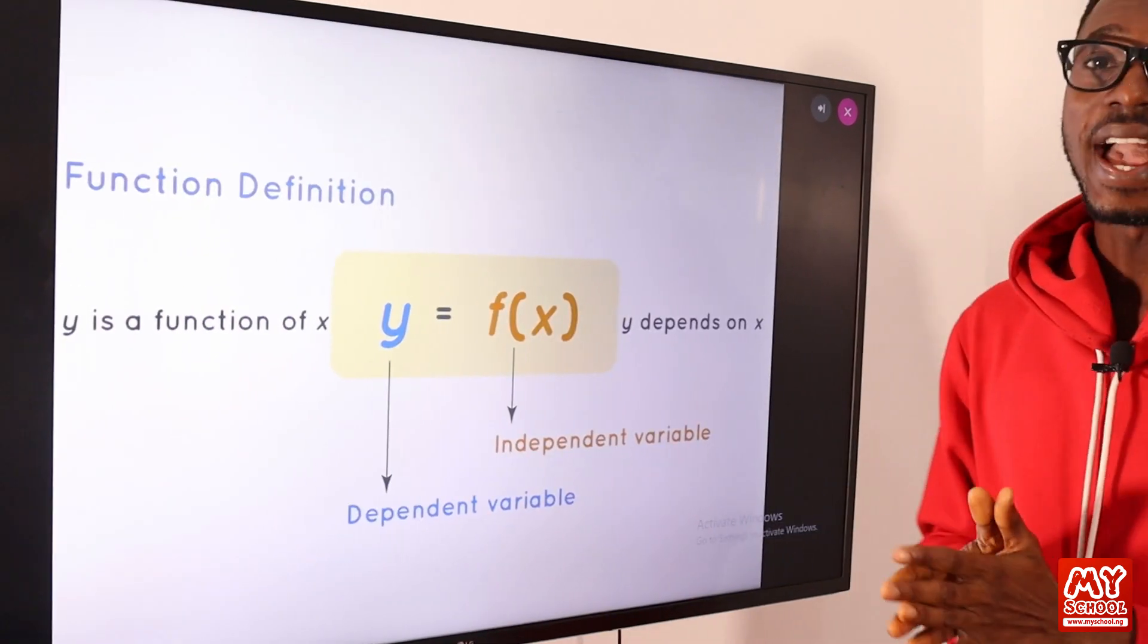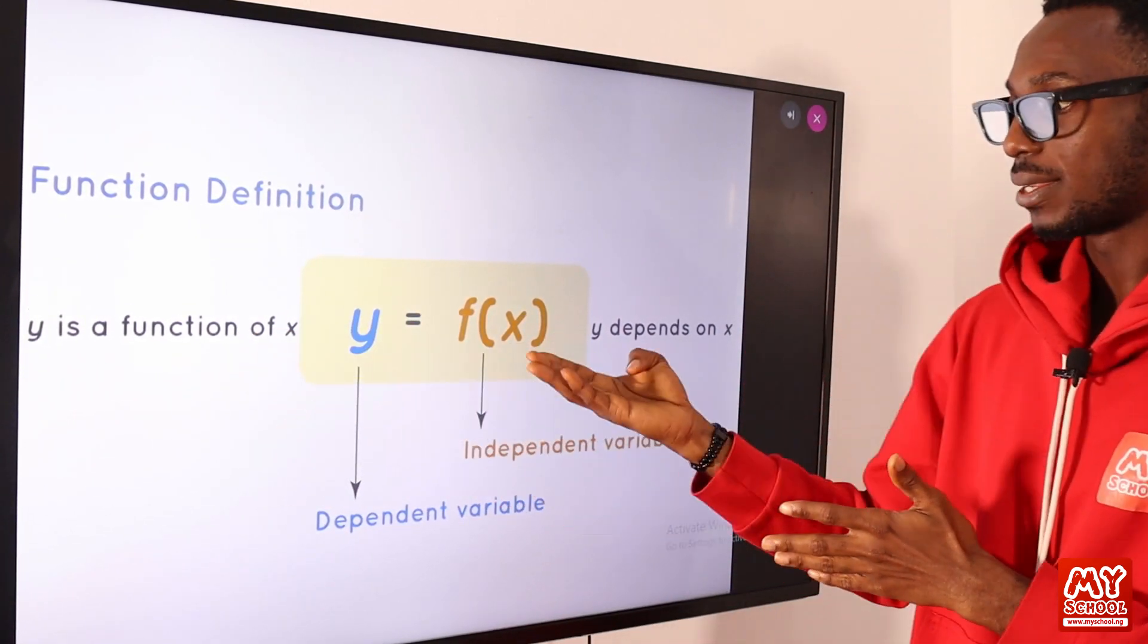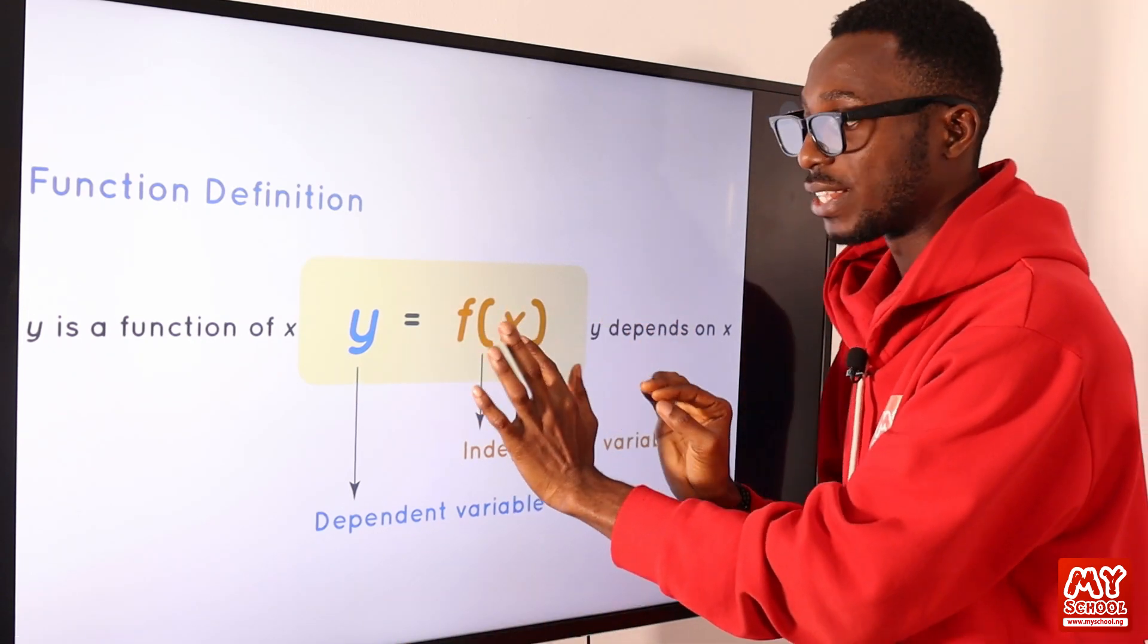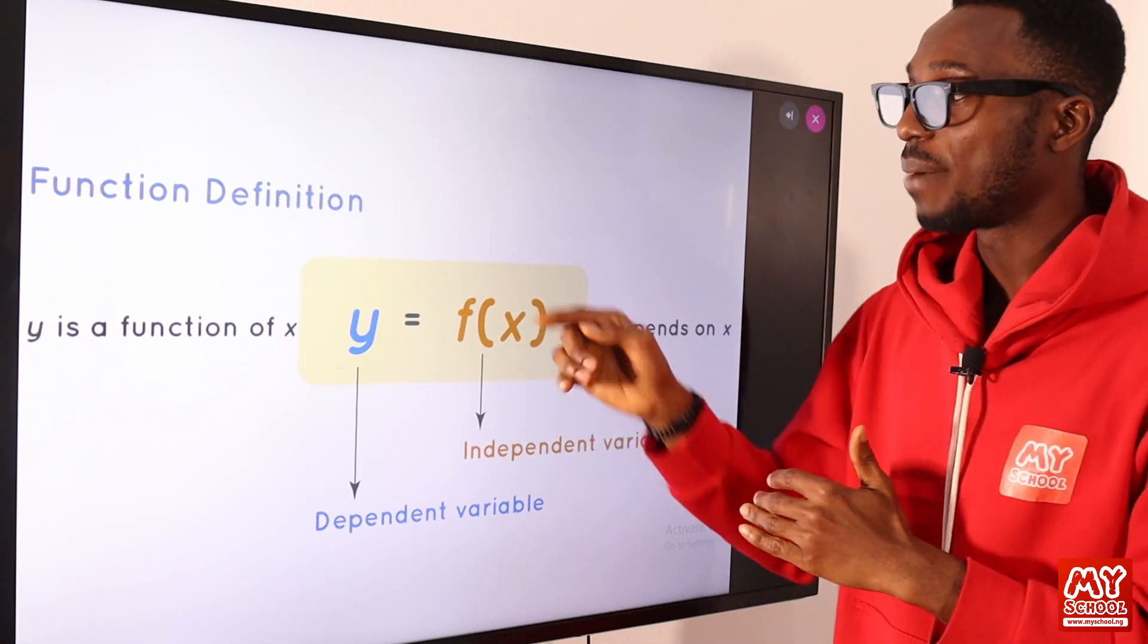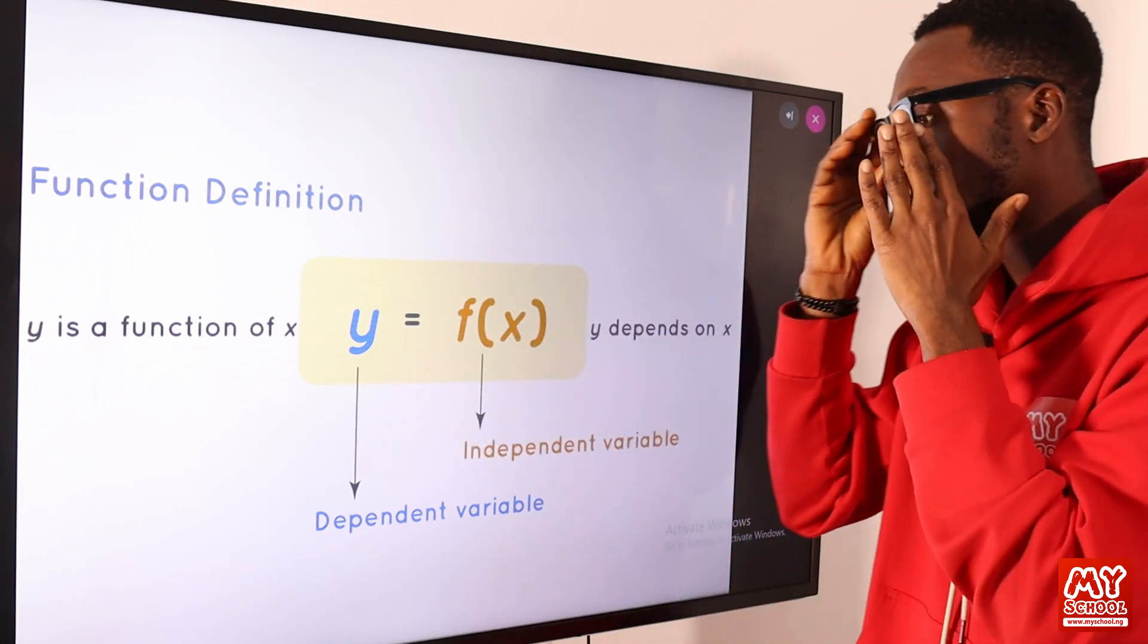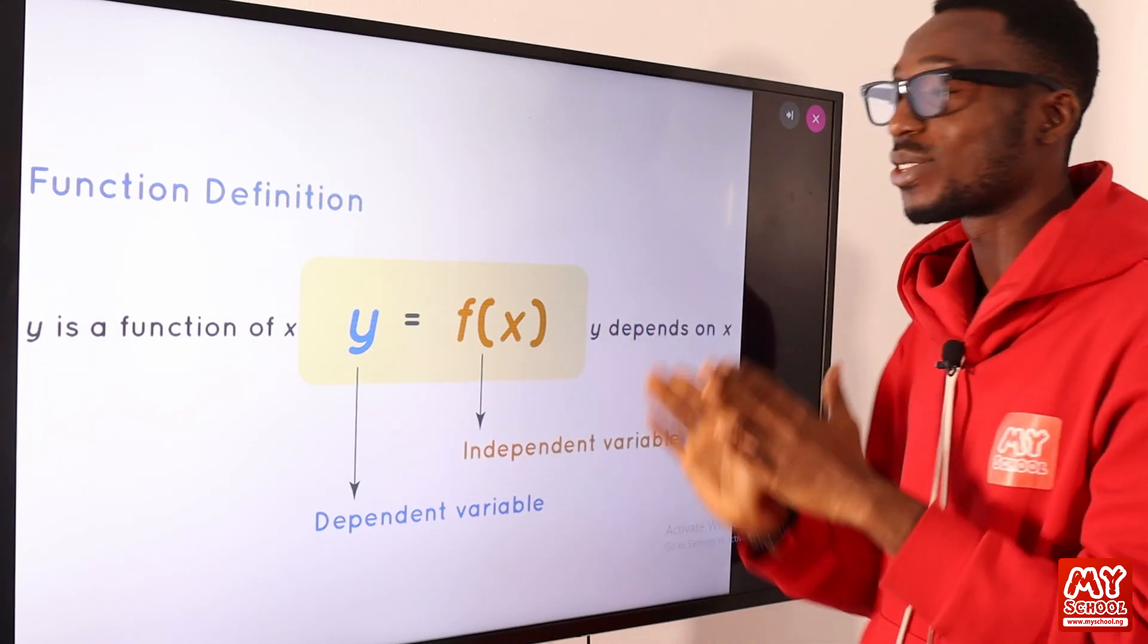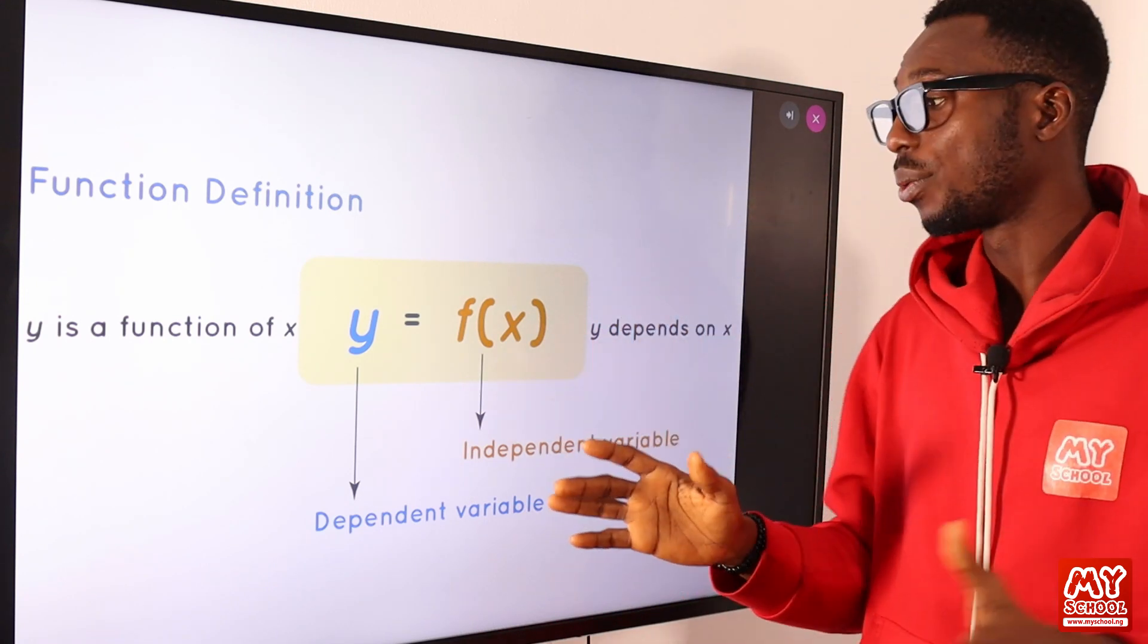How would you define a function? Y is a function of x. This is a dependent variable because whatever value this particular letter carries will determine what this is going to be. This represents your input and this is where your output will be reflected. This is your dependent variable. This is your independent variable because y depends on x.